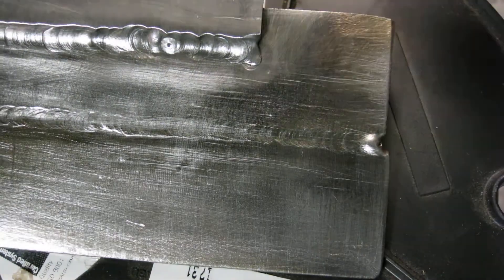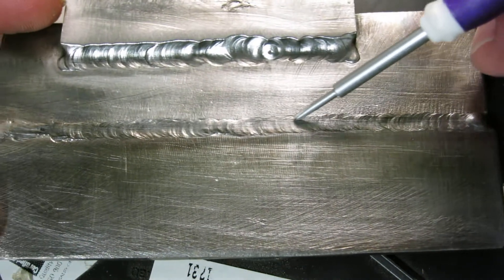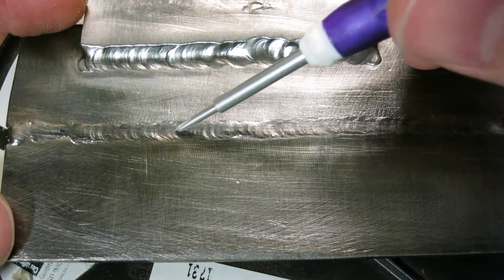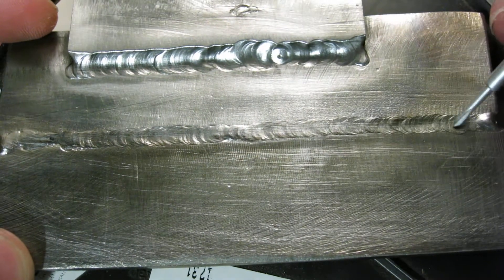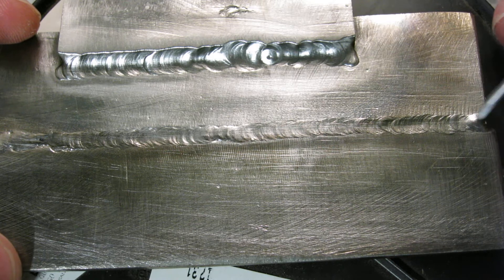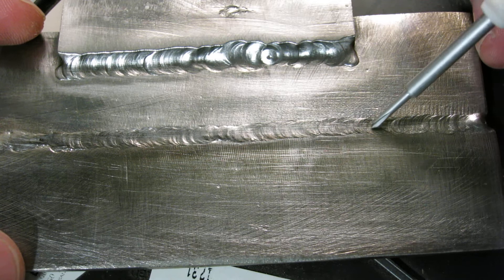So that came out really good. I'm super impressed with that. The first pass I did, I took it out of the clamps and just bent it with my hands and snapped it in half. And I had a look and it wasn't penetrating at all. I was just sort of moving around a little puddle on the surface that wasn't actually penetrating.